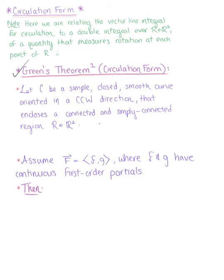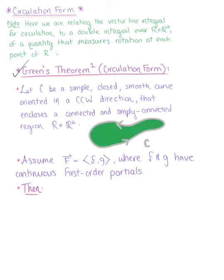Here is such a curve oriented in the counterclockwise direction, and within this curve is that region R that we're thinking about. We now want to assume that some vector field in R2 has components with continuous first-order partials, and then we're able to state the theorem.